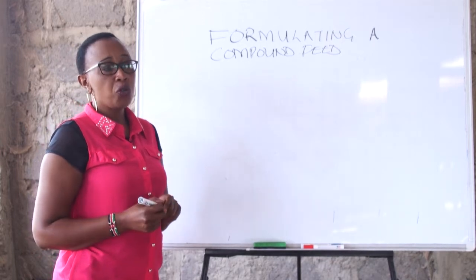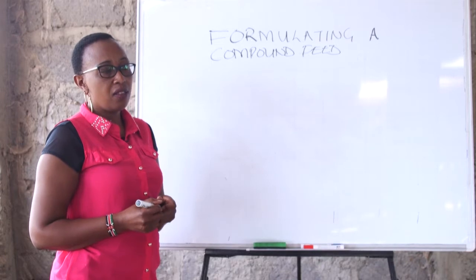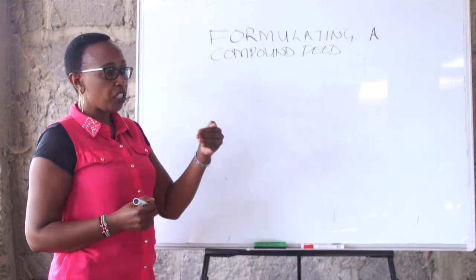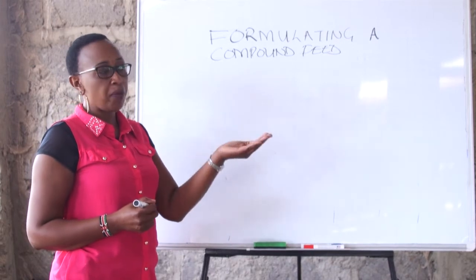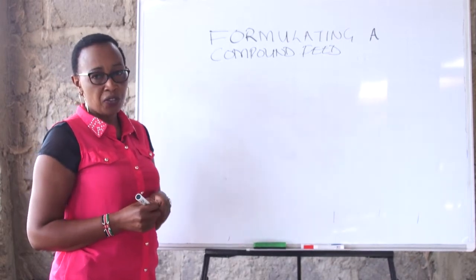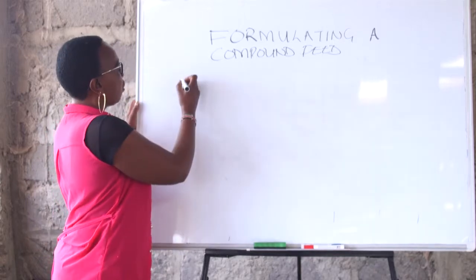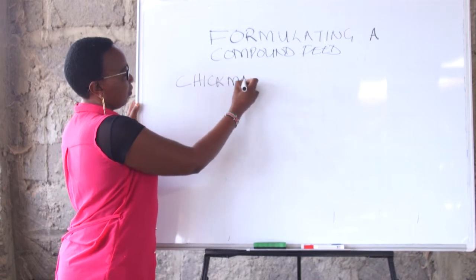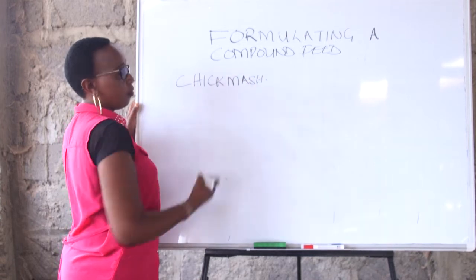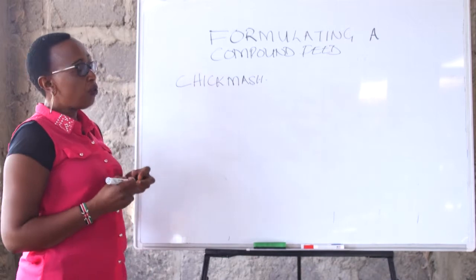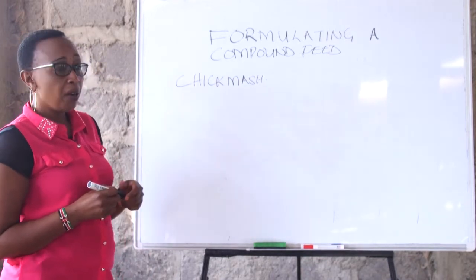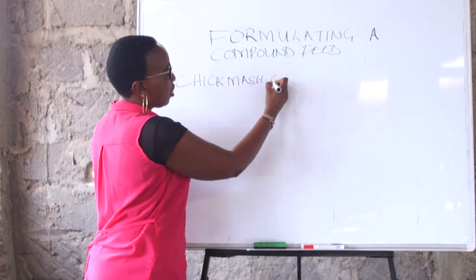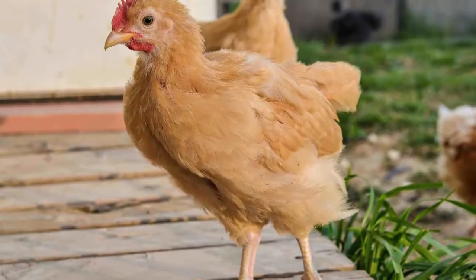I know many people would want to know how to formulate all the types of feeds. I will give you exactly what is required in each feed and give an example of how to formulate one, and then you can formulate the rest. So if you are looking to make a chick feed — a chick mash is given to chicks that are 0 weeks to 8 weeks.